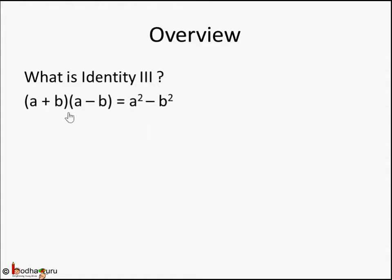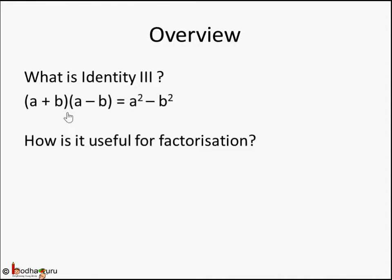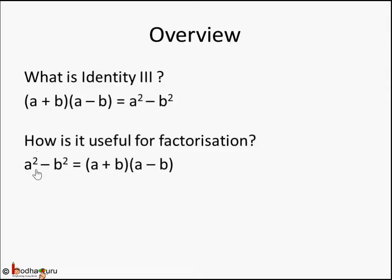This identity can be written either way, and it is useful for factorization. If we are given an algebraic expression of two terms that can be represented as a² - b², then we can write it as (a + b)(a - b), which is the product of two factors.